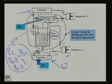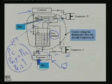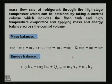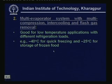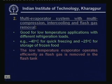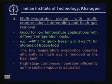The advantages of the multi-evaporator multi-compression system are: it is good for low-temperature applications with different refrigeration loads — for example, minus 40°C for quick freezing and minus 25°C for frozen food storage in a food processing plant. The low-temperature evaporator operates efficiently because flash gas is removed in the flash tank, and the high-stage compressor operates efficiently because the suction vapor is saturated.